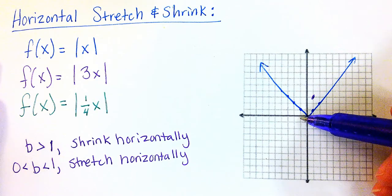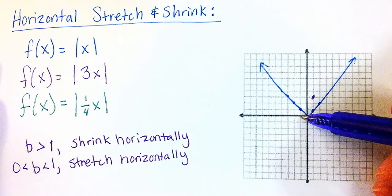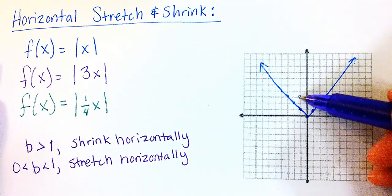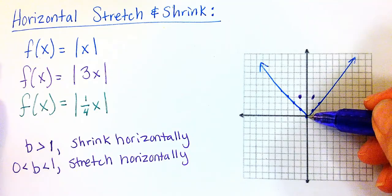And if I had negative 1, the absolute value of 3 times negative 1 is also 3. So now we have this graph.